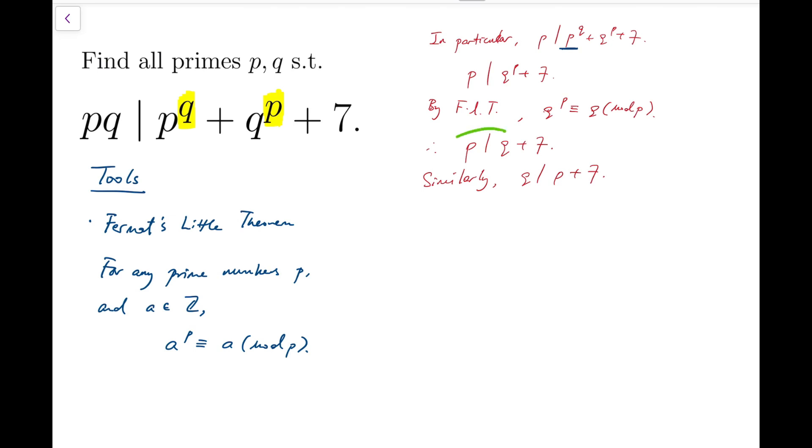These two relations on divisibility are quite symmetric. So the next trick that I'm going to use is to add some expression, add something on both q plus 7 and p plus 7. I'm going to add p divides p plus q plus 7 instead, not just q plus 7, but adding a p into that. And q divides p plus q plus 7, not just p plus 7, but adding a q into it as well.